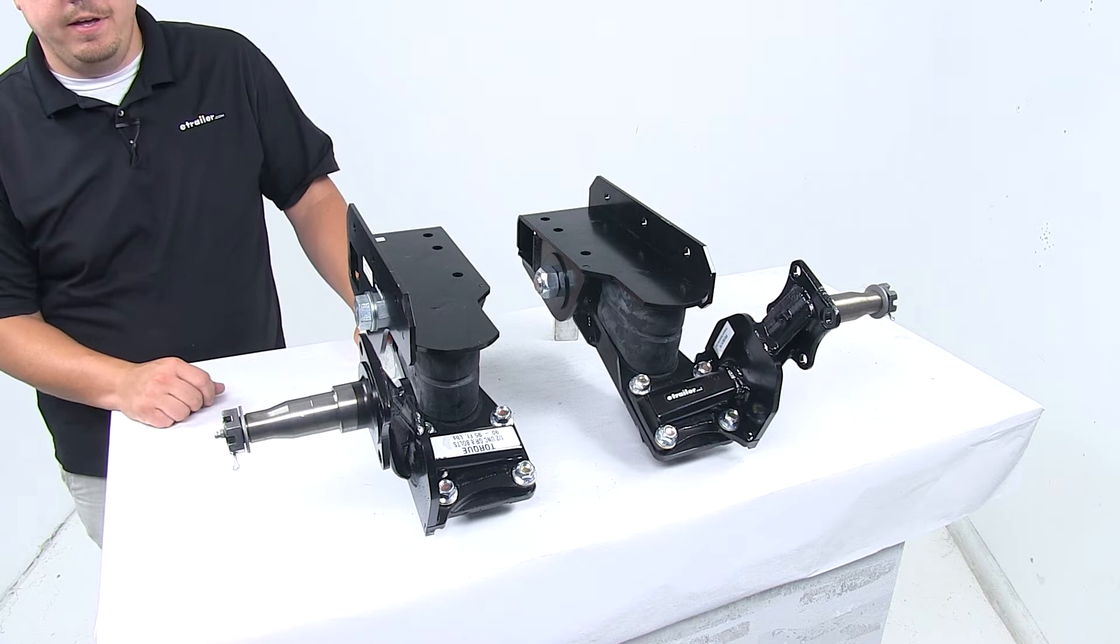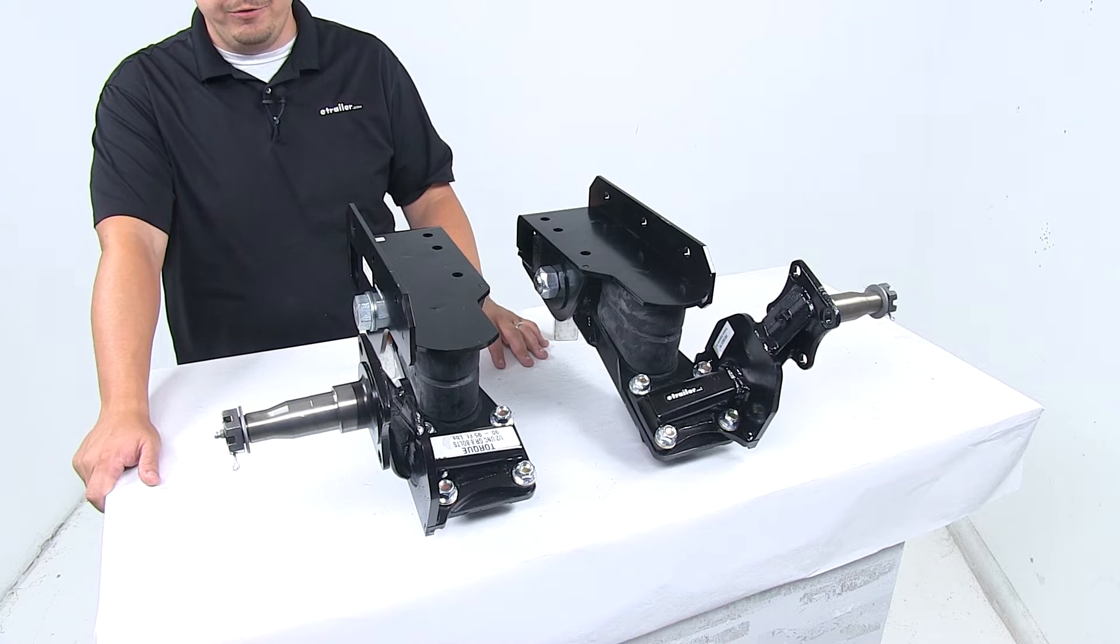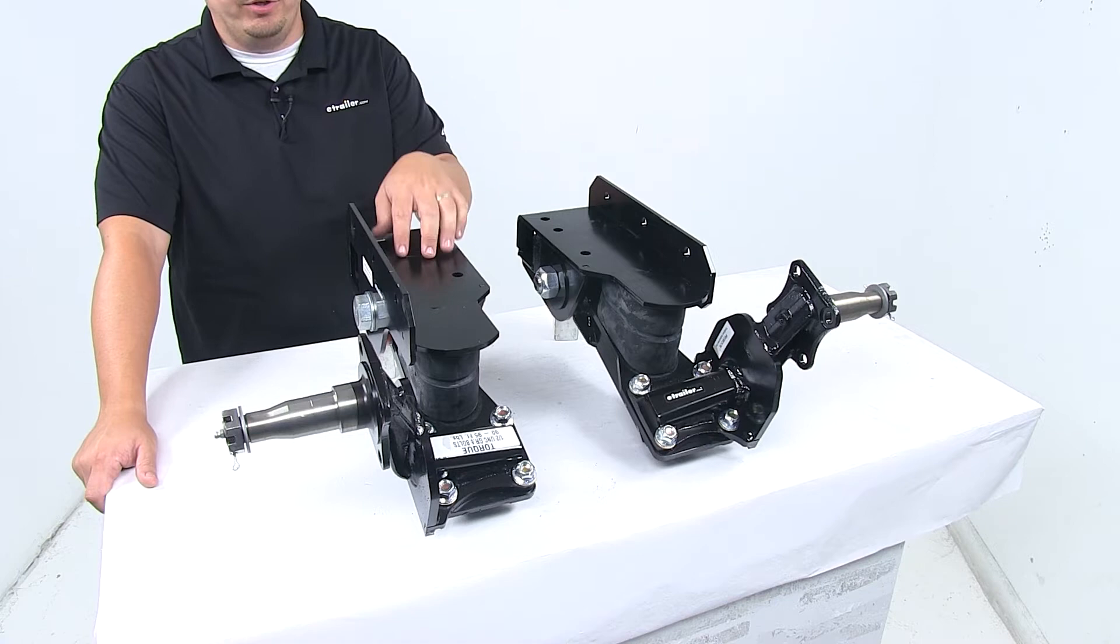Two separate units replace your existing axle, and it is designed to fit one axle and two axle trailers that use regular tires. This kit is not recommended for triple axle applications, and it does feature a weight capacity of 3,500 pounds. The progressive rate main springs